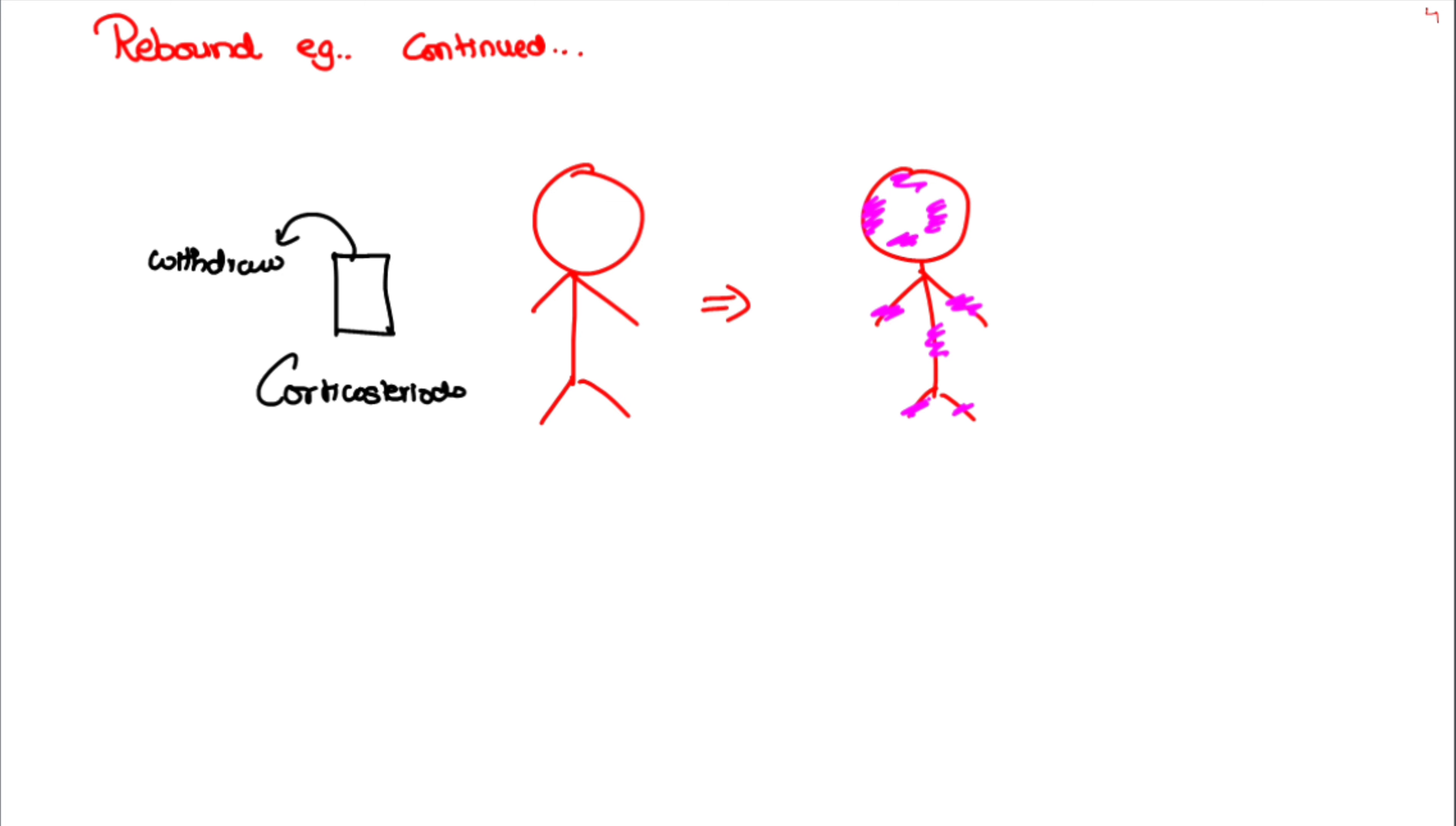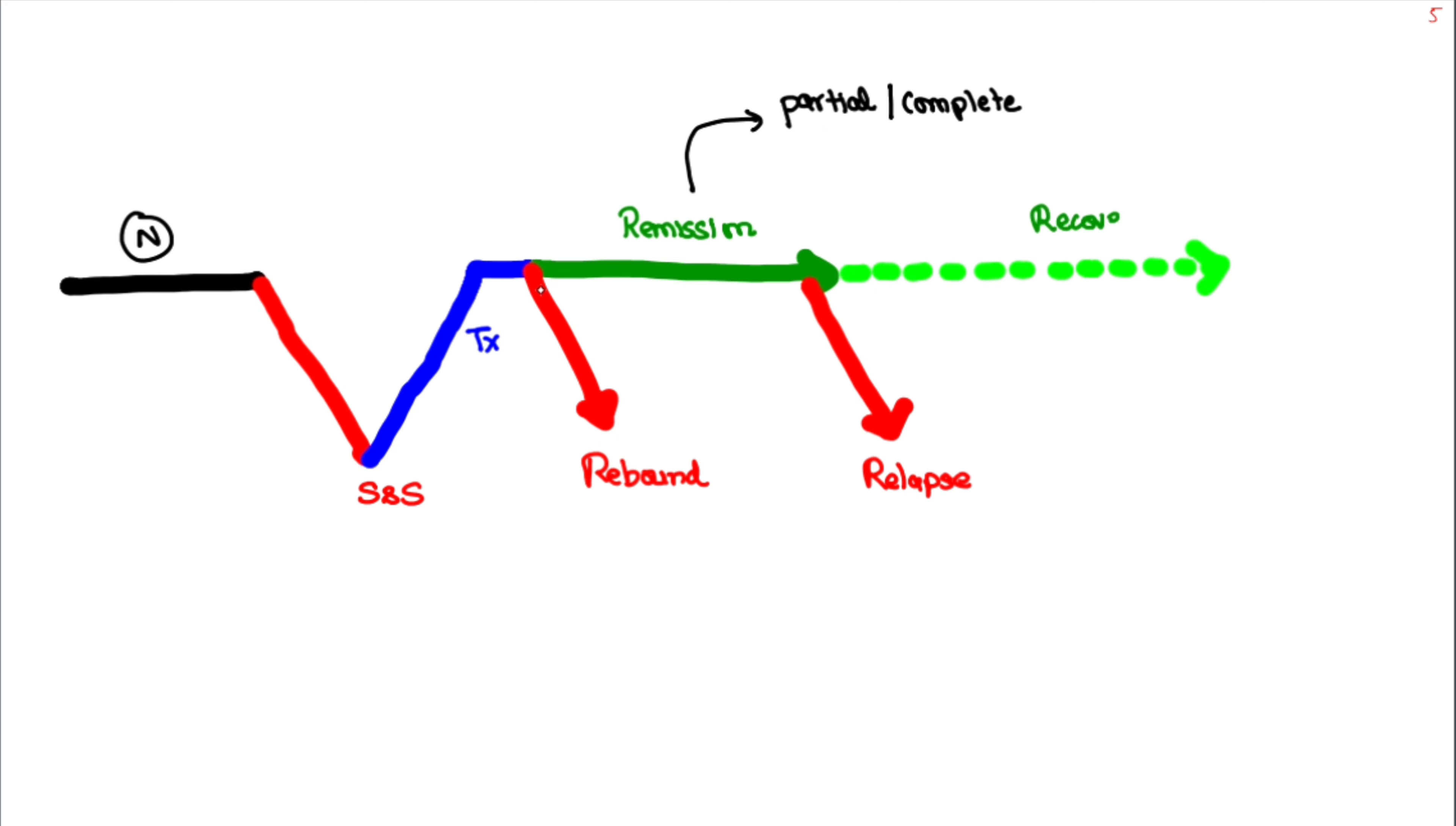So until now we saw what is remission, relapse, and rebound. Remission is a return to normal after symptoms of an ongoing episode which was symptomatically suppressed. It can be of two types: partial and complete. For simplicity, let's consider recovery as complete remission, or we can say the next stage of remission.